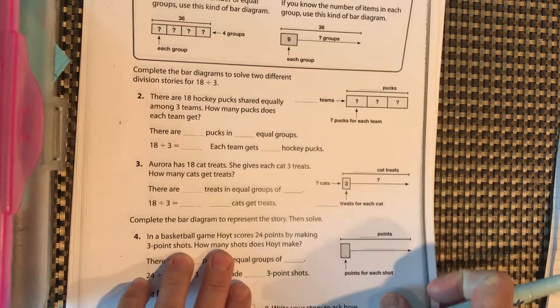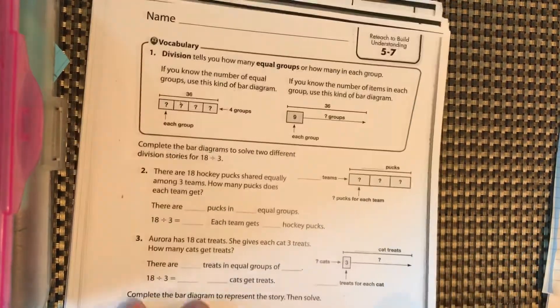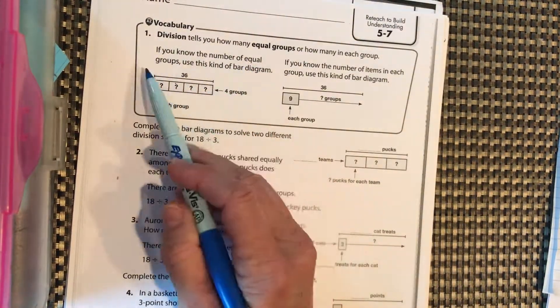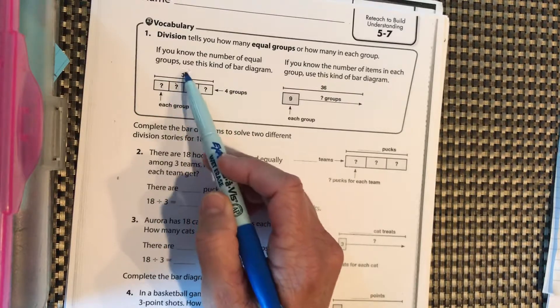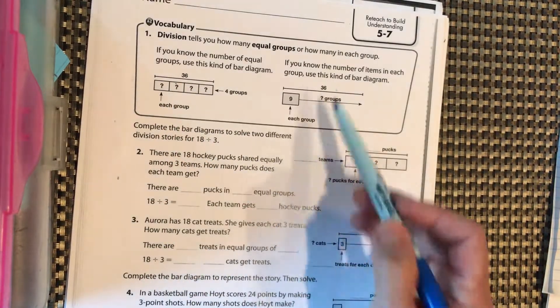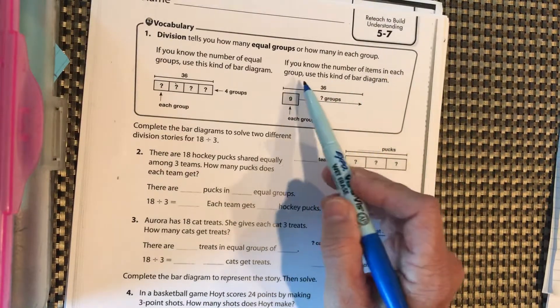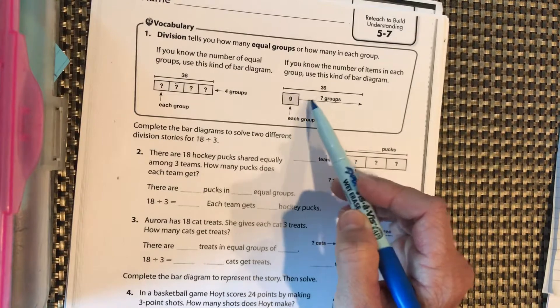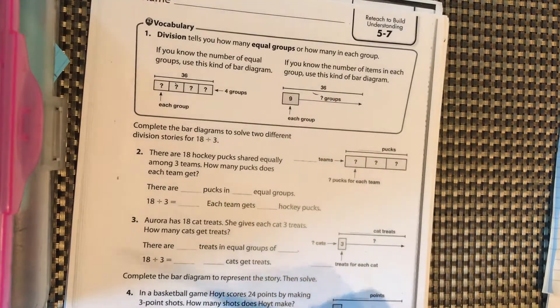Division tells you how many equal groups or how many in each group. If you know the number of equal groups, you can use a bar diagram. Your total is at the top, you have four equal groups, and you want to know how many in each group. If you know the number of items in each group, then you can draw your box, put your items in it, and keep drawing your boxes until you get to the total number that you have.